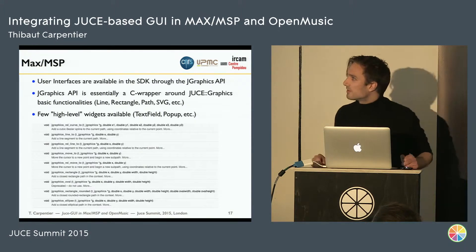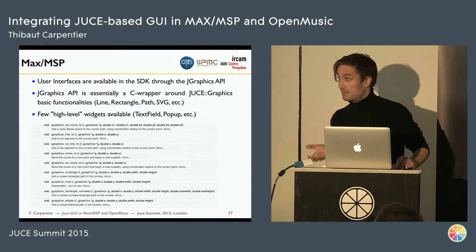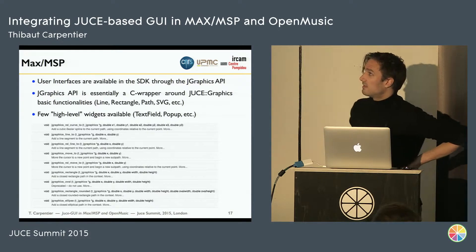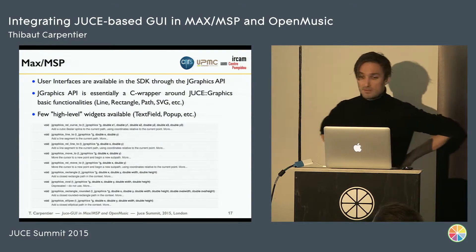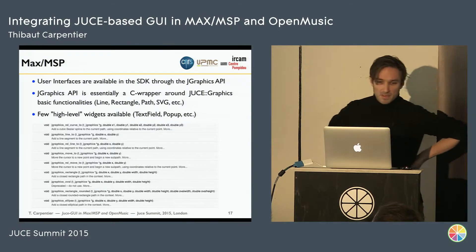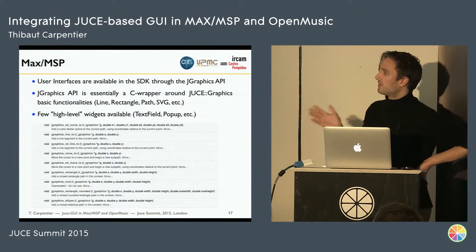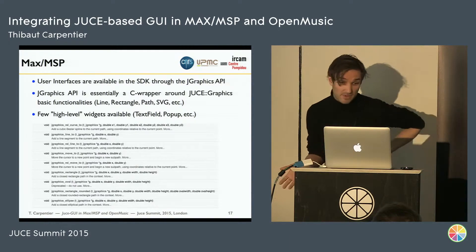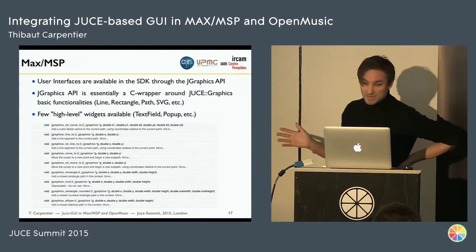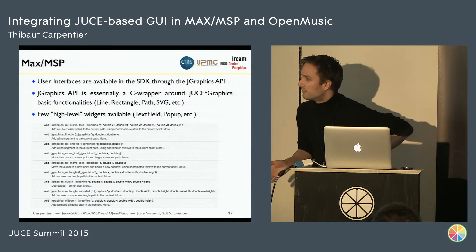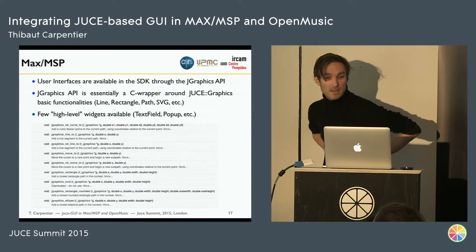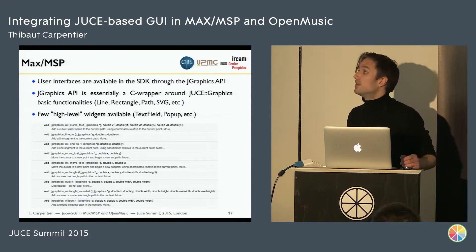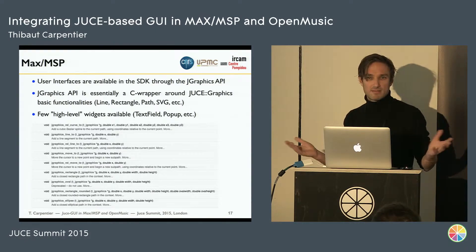A few words about the different software. Max MSP comes with an SDK that allows you to create your own boxes and develop your own objects. Part of this SDK is dedicated to UI, so you can develop your own graphic objects within Max MSP. As Max MSP relies on JUCE, the graphic API of Max MSP is pretty similar to what you can find in JUCE, except that it is a C API — basically a C wrapper to the most standard functions of JUCE. The problem is that it lacks some functionality and is not as powerful as JUCE; for instance, you don't have access to all the widgets.